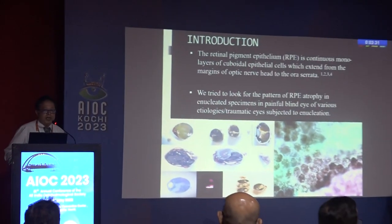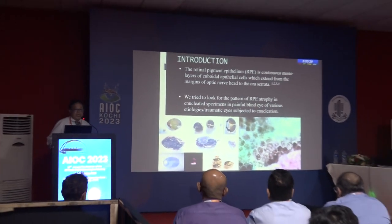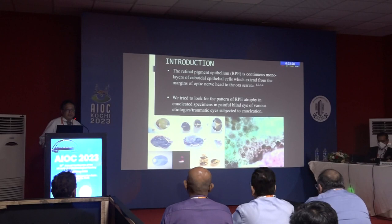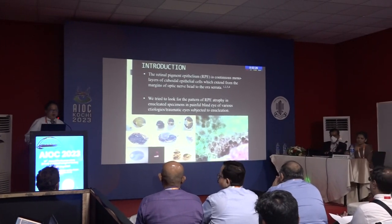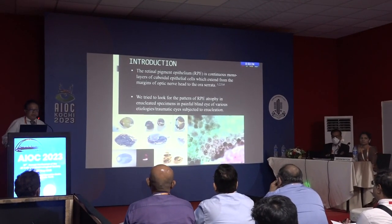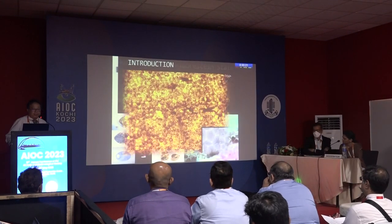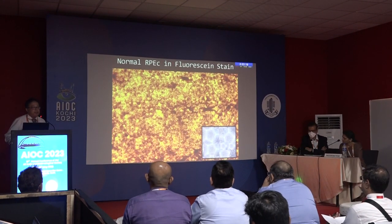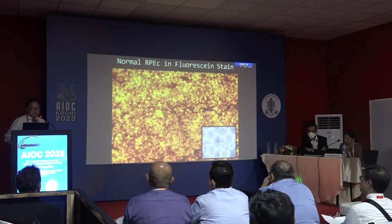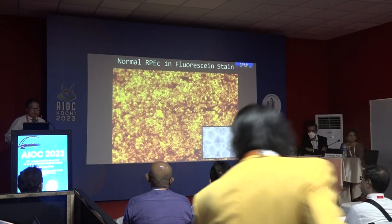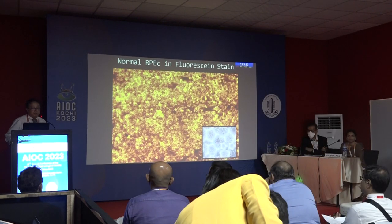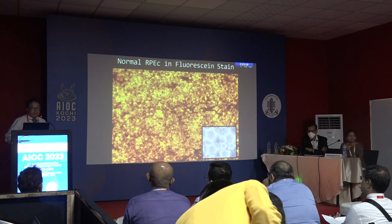Retinal pigment epithelium is a continuous monolayer of cuboidal epithelium cells extended from the margin of the optic nerve to the ora serrata. We tried to look at the pattern of RPE in disease as well as in normal states. This is a normal retinal pigment epithelium demonstrated in a raw specimen, an enucleated eyeball, where the hexagonality is evident.